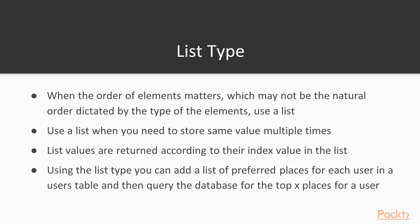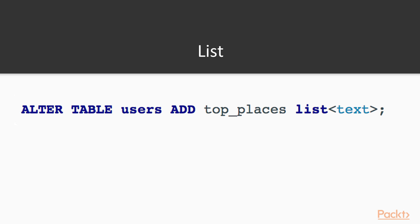List values are written according to their index value in the list, whereas set values are written in alphabetical order, assuming the values are text. Using the list type you can add a list of preferred places for each user in a users table, then query the database for the top X places for that user. We can add this to our table with: ALTER TABLE users ADD top_places list of text.